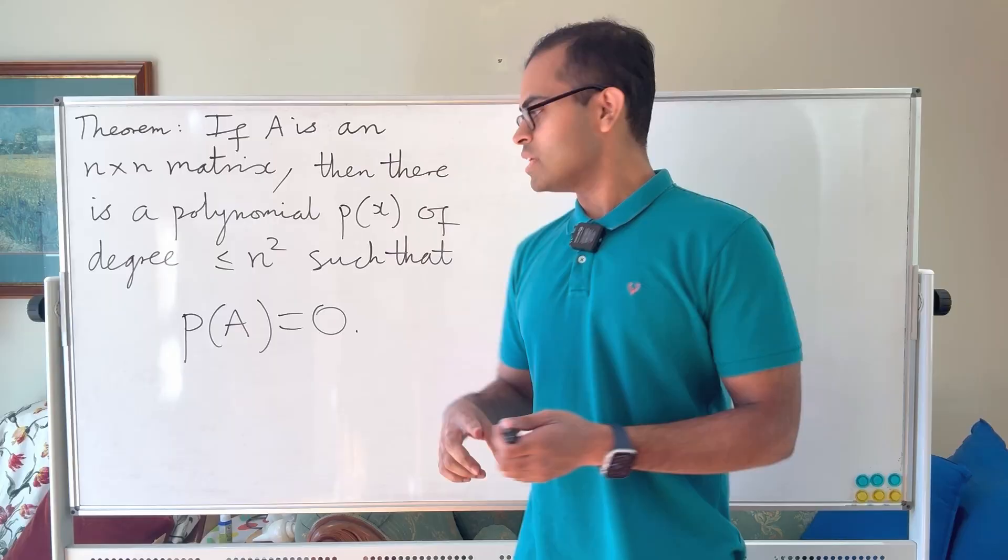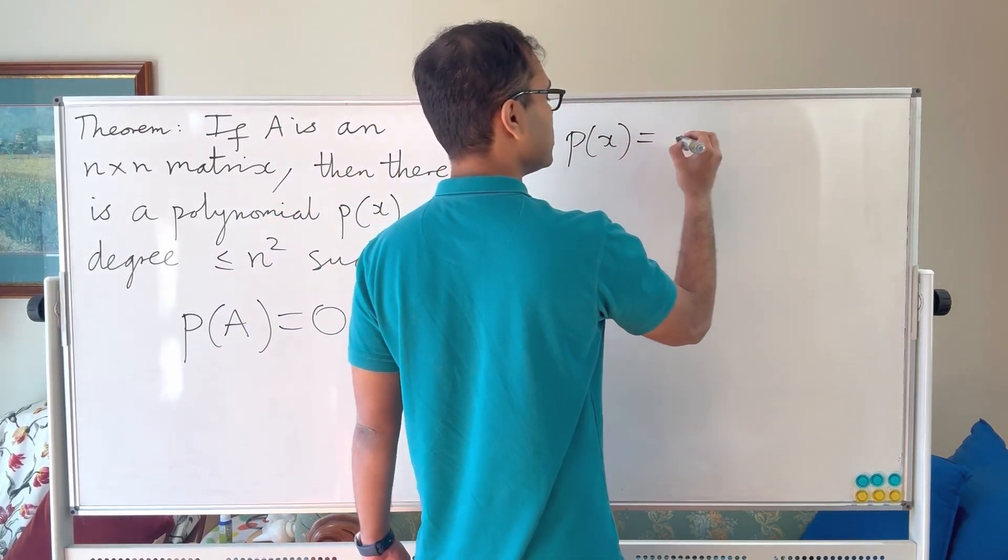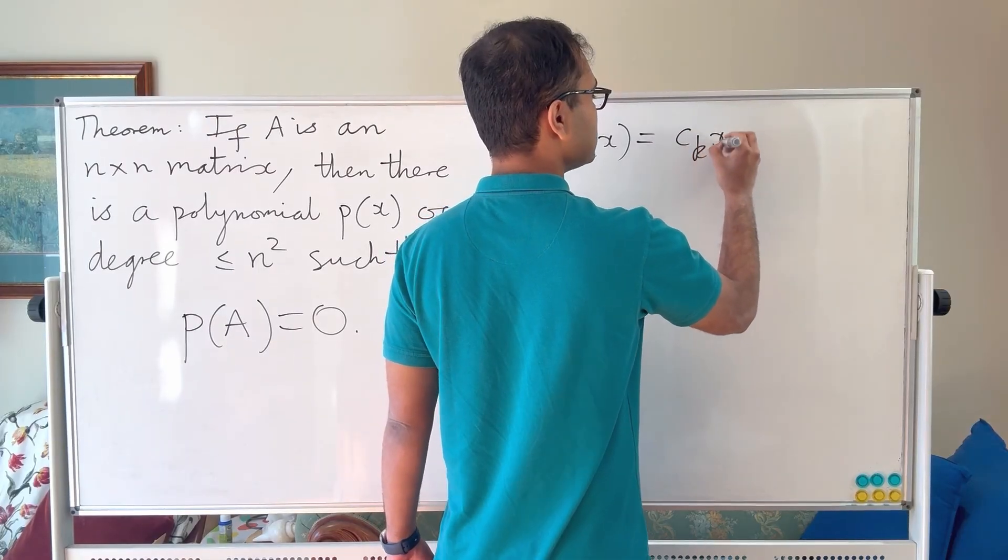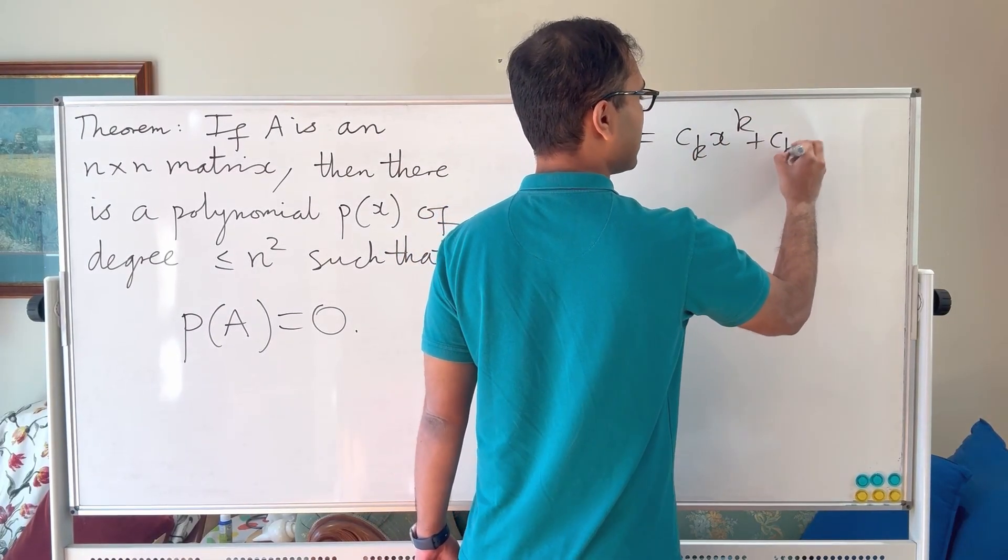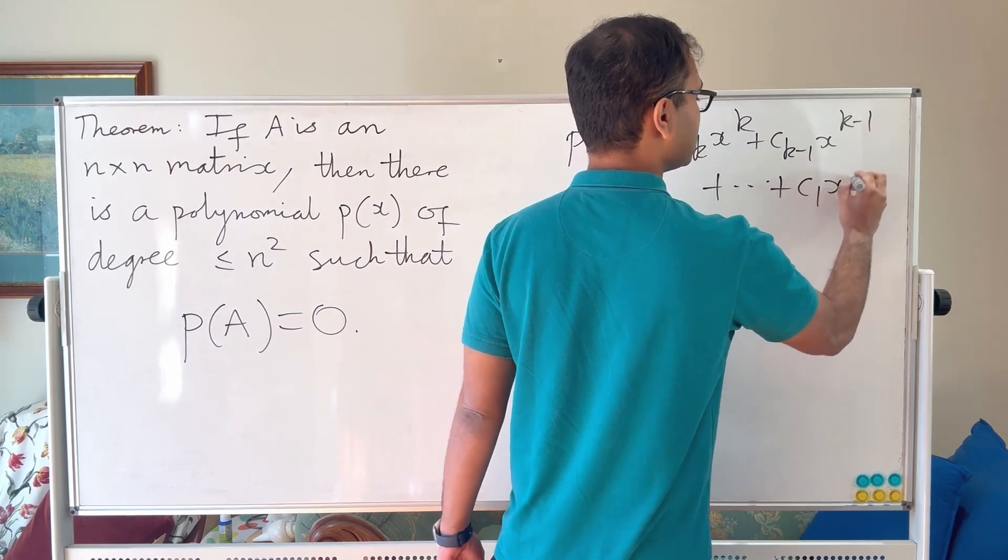So to be more explicit, if we wrote down P of x as a polynomial, we could write it as C_k x to the k plus C_{k-1} x to the k minus 1 dot dot dot plus C_1 x plus C_0.